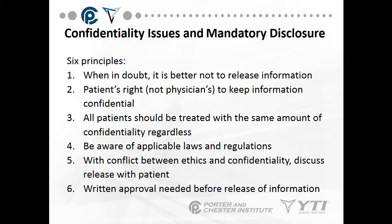Confidentiality issues and mandatory disclosures — six principles: Number one, when in doubt, it is better not to release information. Number two, it is the patient's right, not the physician's, to keep information confidential. Number three, all patients should be treated with the same amount of confidentiality regardless of situation. Number four, be aware of applicable laws and regulations. Number five, when there is a conflict between ethics and confidentiality, discuss release with the patient. Number six, written approval is needed before the release of information. If you've ever asked for your medical record, you know you have to go to the medical records department in person, show your license, and sign a medical records release form before records are released.